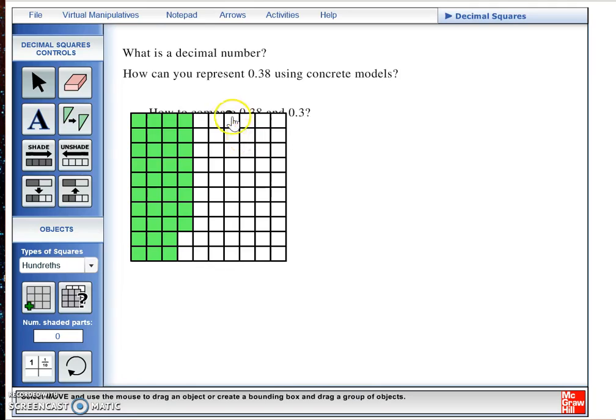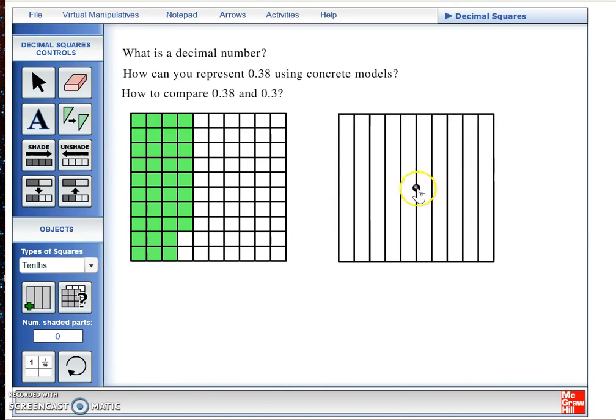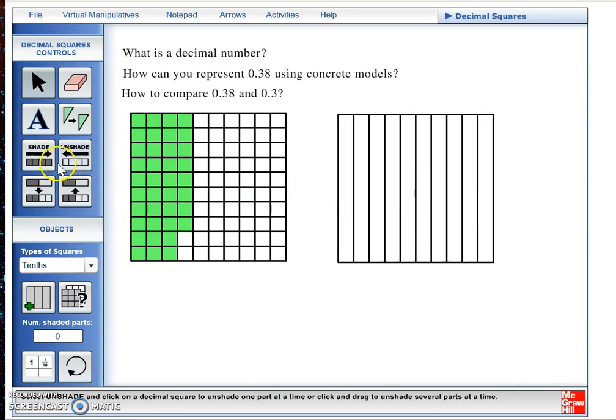Our third and final question for this video was how to compare 38 hundredths and 3 tenths. Since we have already represented 38 hundredths using a hundredths square, we will now represent 3 tenths using a tenths square. The 3 tenths means that we are shading in 3 of the equally portioned pieces of our tenths square.